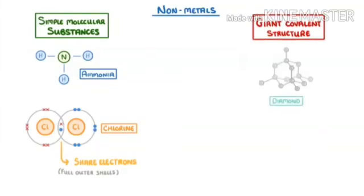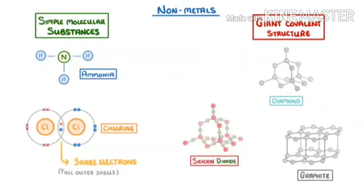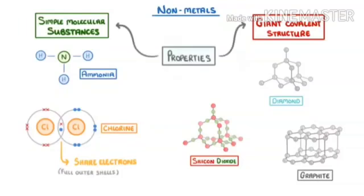They have low melting and boiling points compared to ionic compounds, as covalent bonds are weaker than ionic bonds.